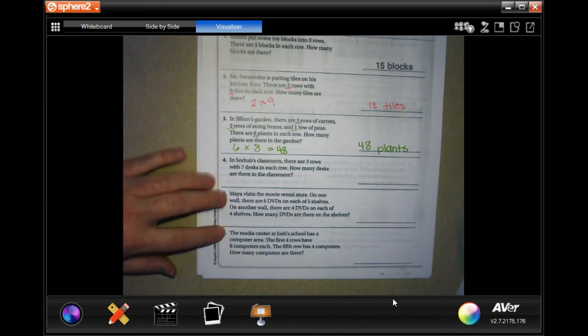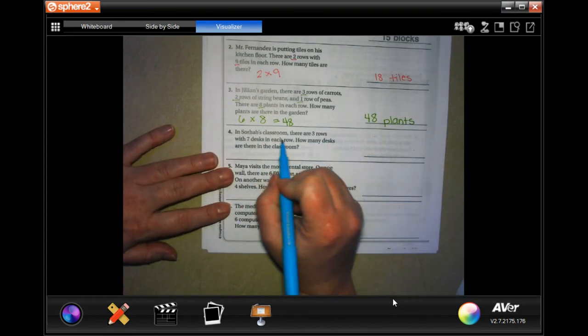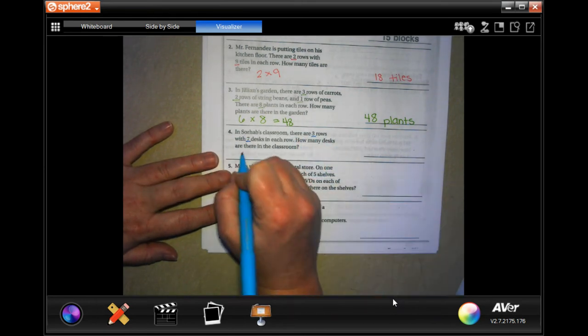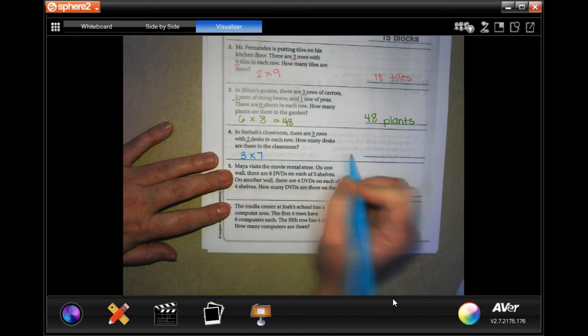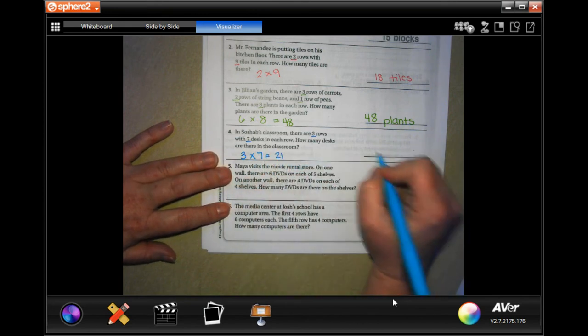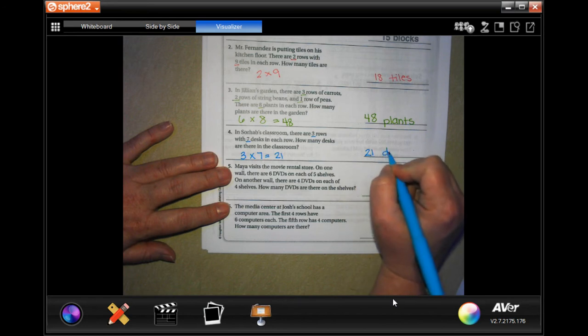All right. In a classroom, there are three rows with seven desks. How many desks are there in the classroom? Well, three times seven is 21. So, 21 desks.